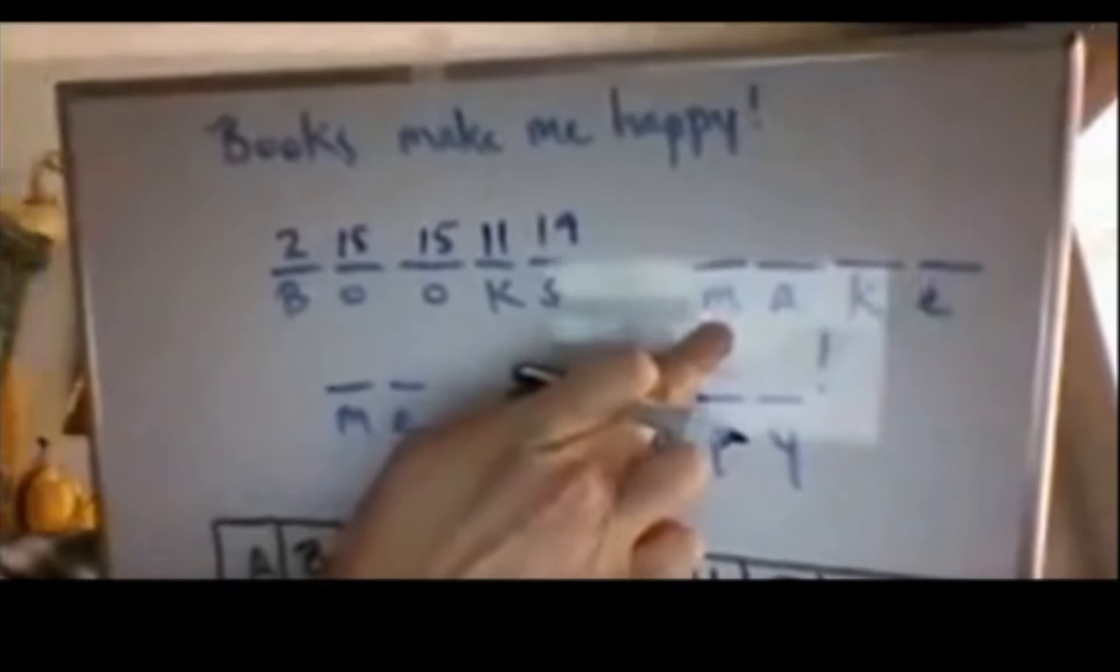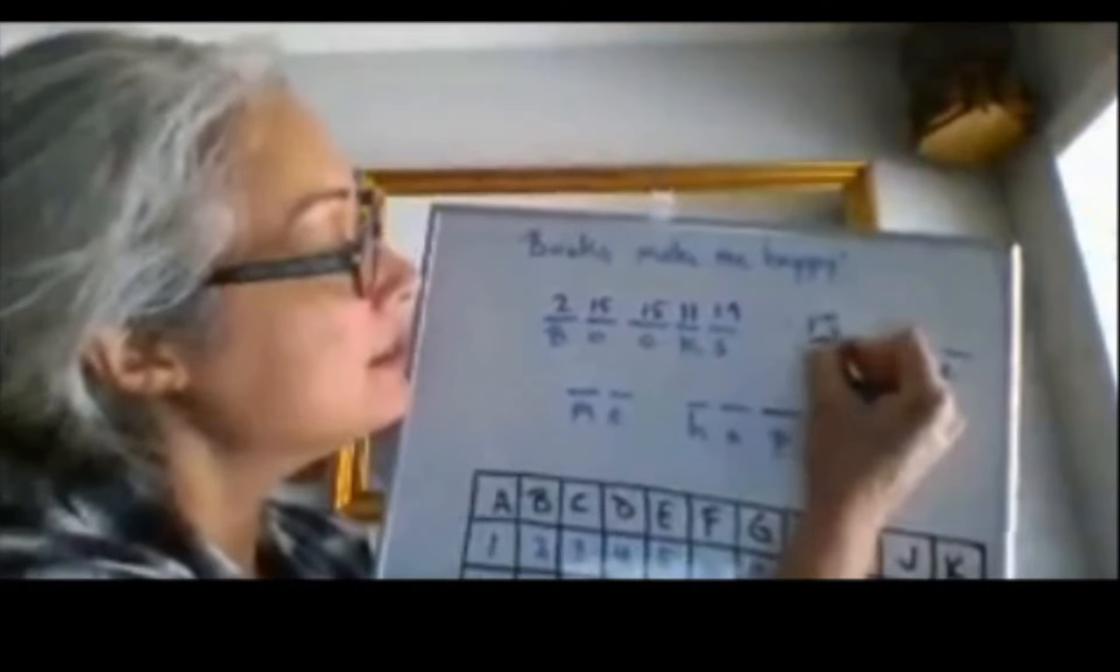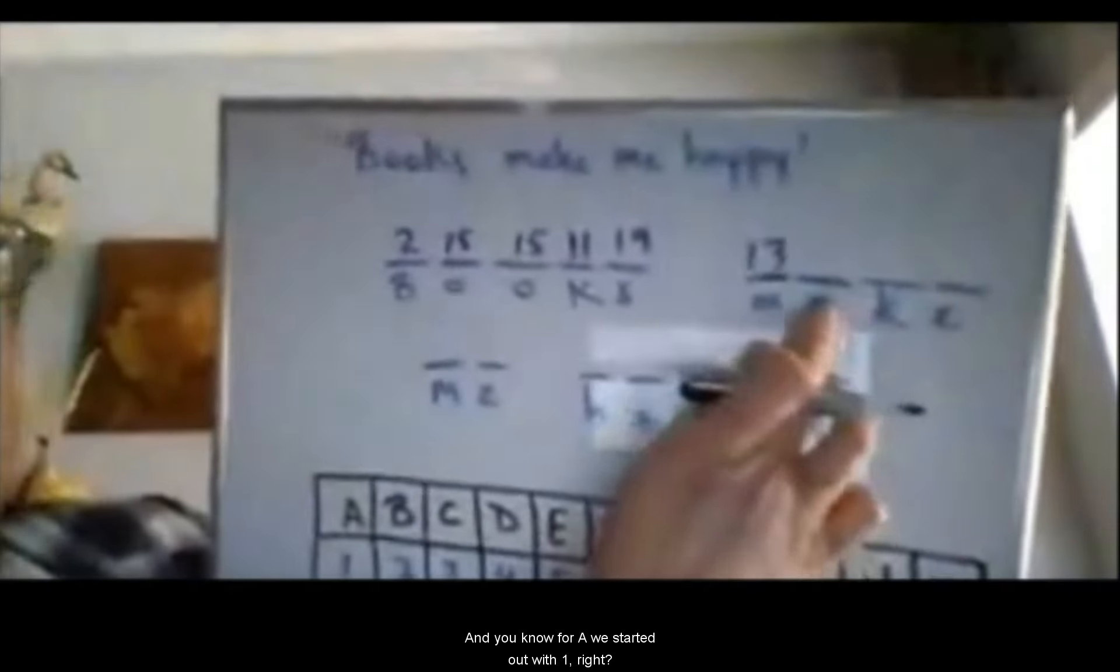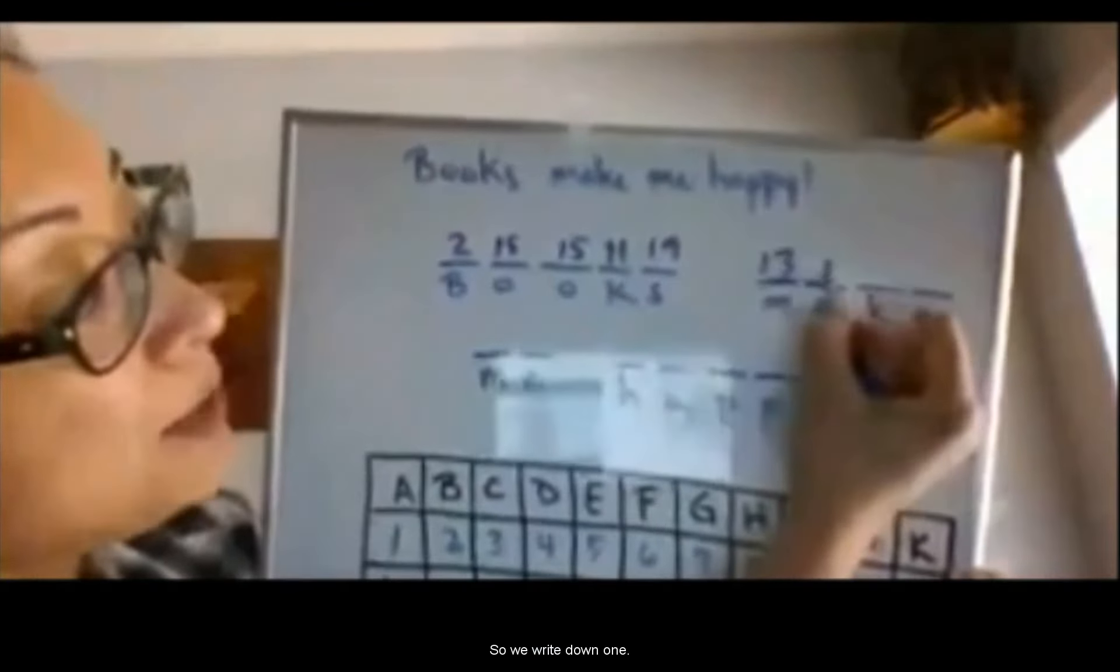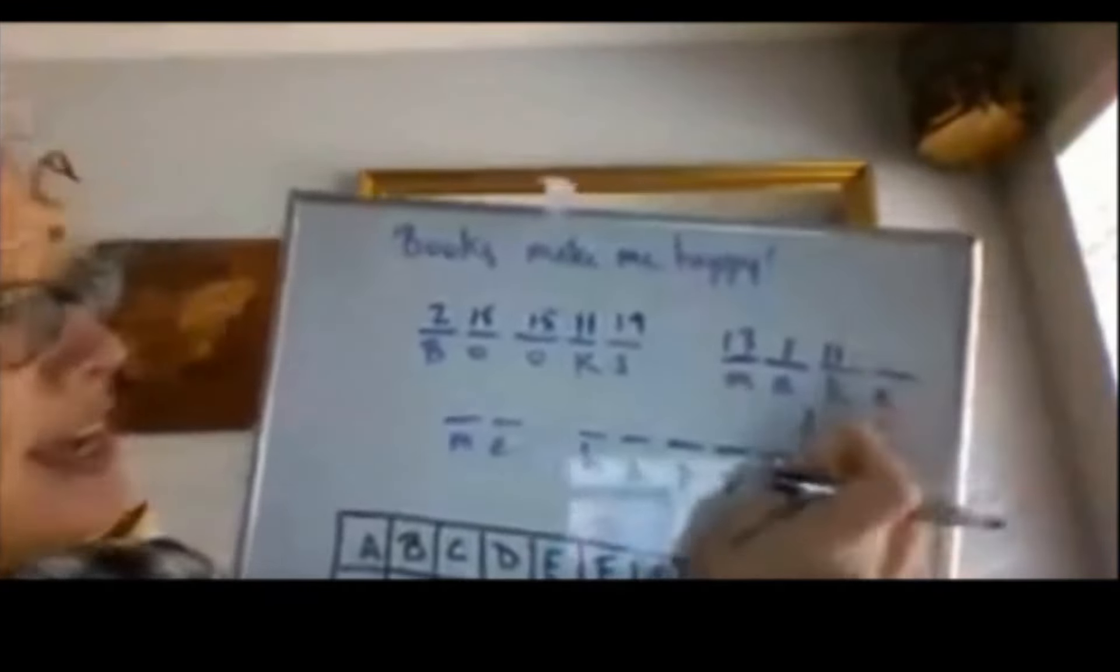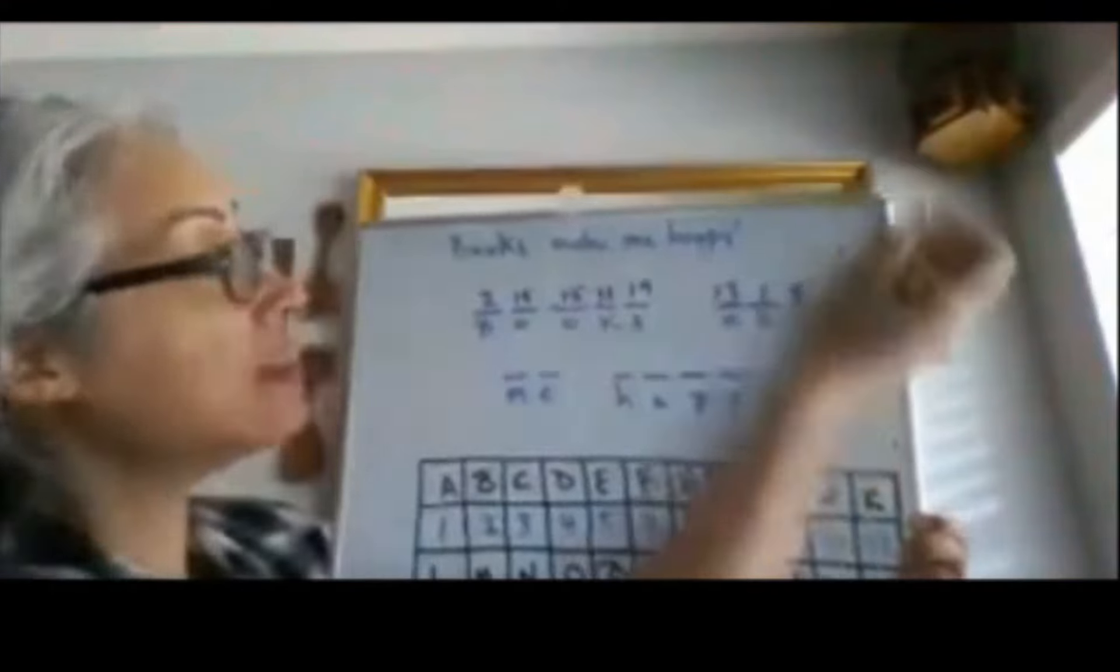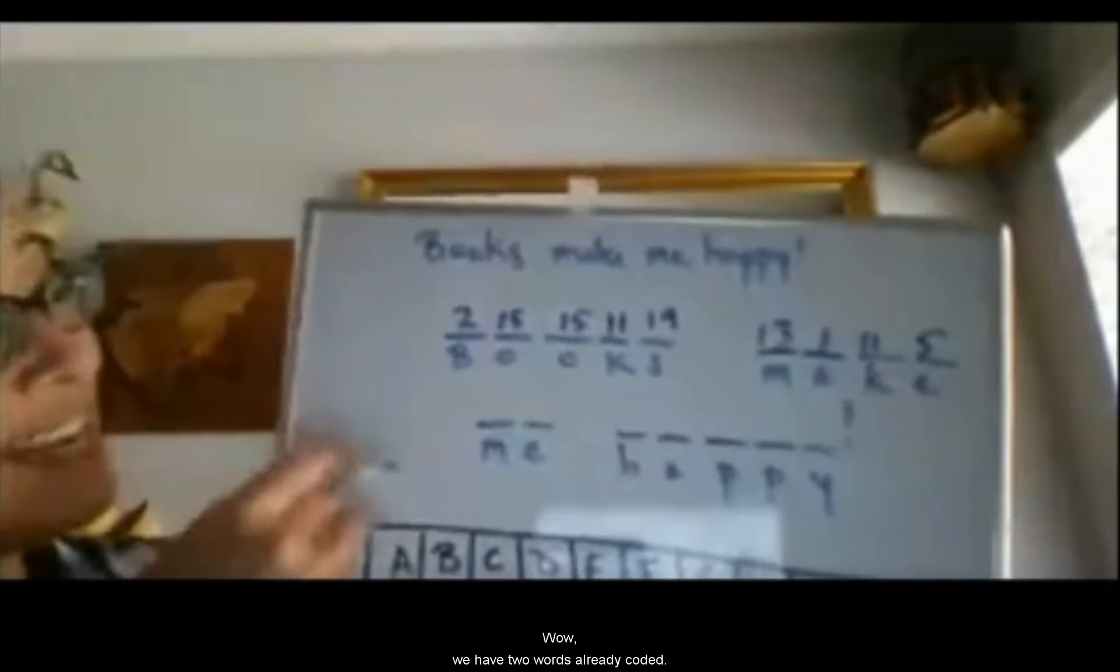Let's find, what letter is this? M. Let's go down here. Do you see M? There it is. Number 13. Okay. So let's put 13 here. And you know for A, we started out with 1, right? So we write down 1. What's the next one? K. Look, we already did K. So we can write down 11. And then we have, what letter is this? E. So let's find E, number 5. Wow. We have two words already coded.